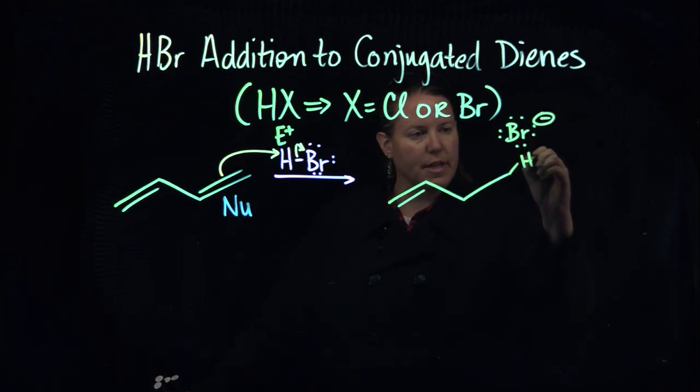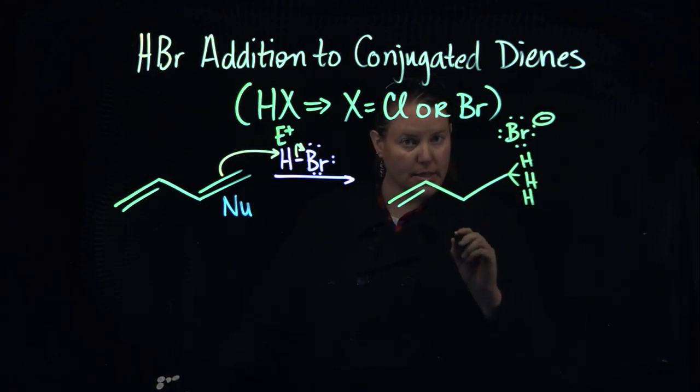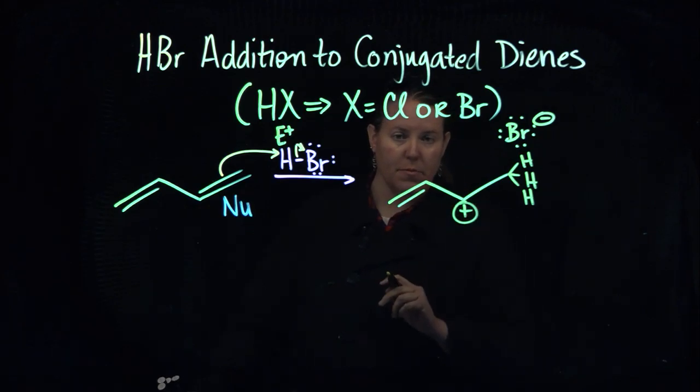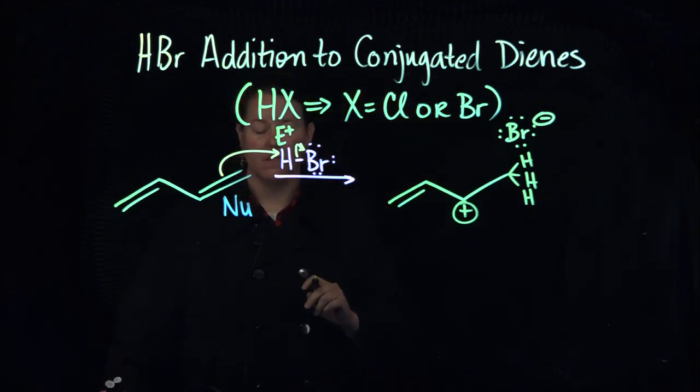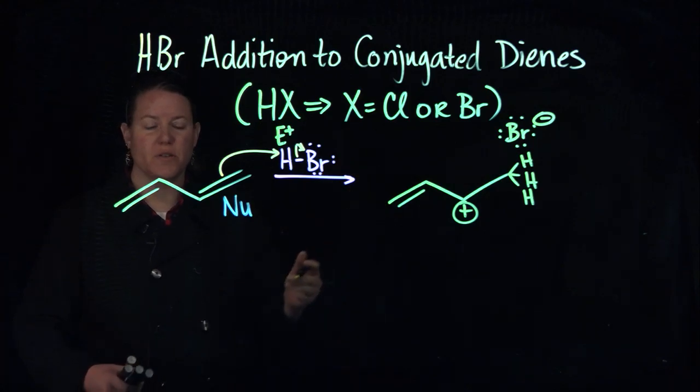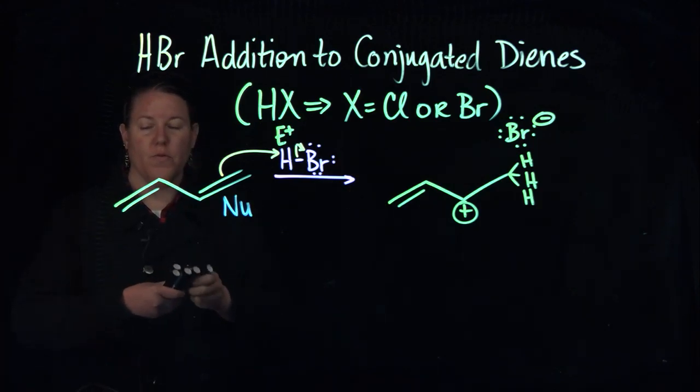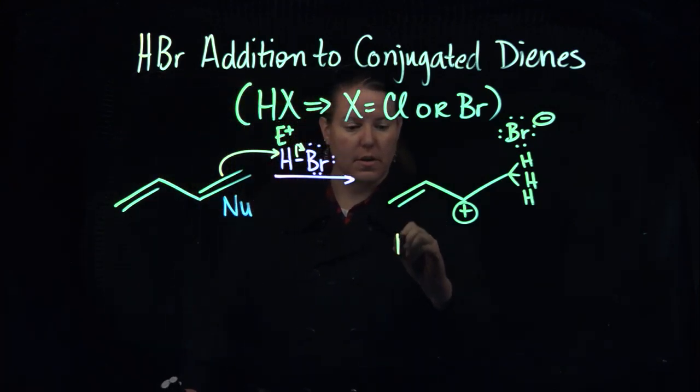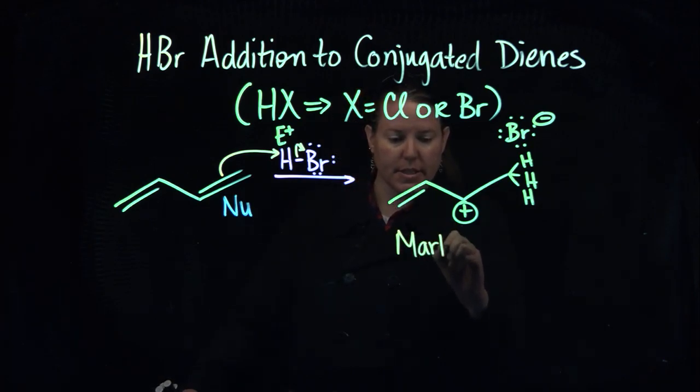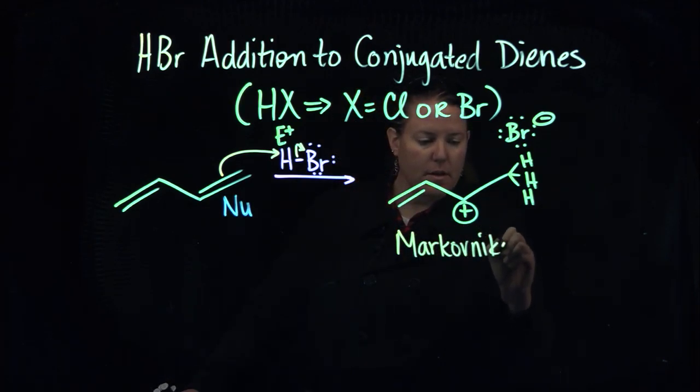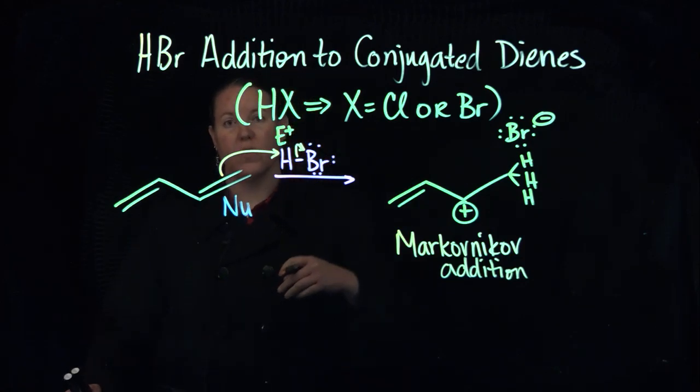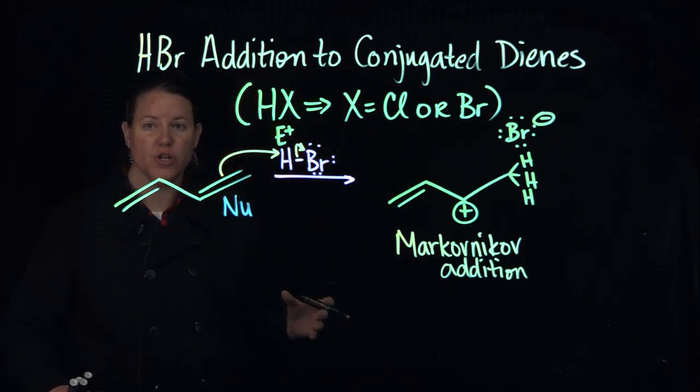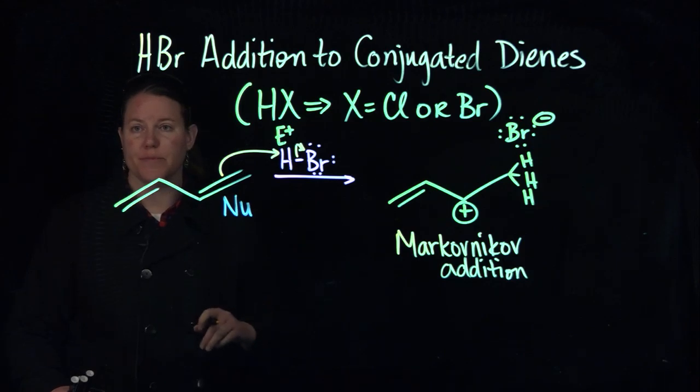And the real question is, where does the H add? Well, the H adds to the less substituted side, because the carbocation needs to form on the more substituted side. And for those of you who forgot what this is called, this is called Markovnikov addition. It's the exact same thing we did when we added something like HX in what we called a hydrohalogenation reaction to an alkene. Exact same deal.